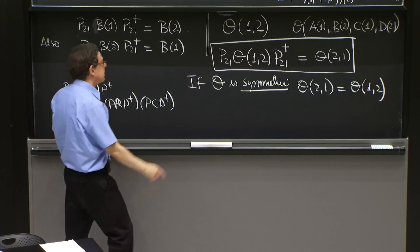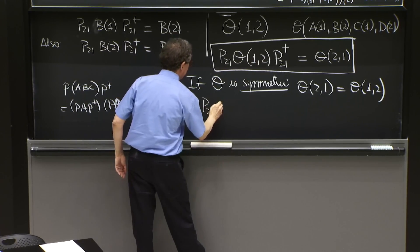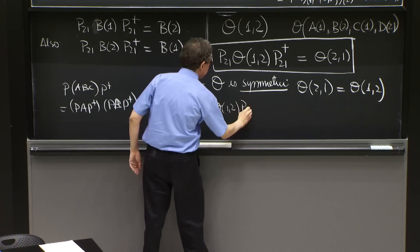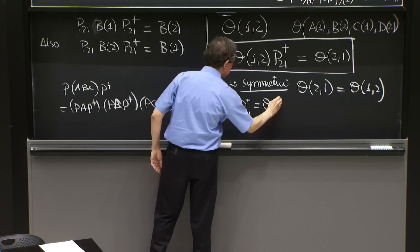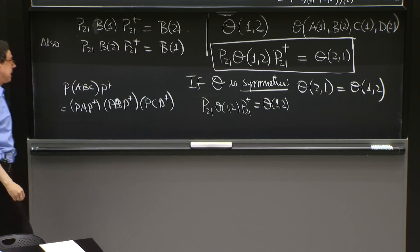If that happens, then from this equation, you would have P21 O12 P21 dagger is O12 is itself.